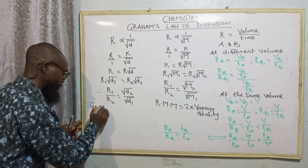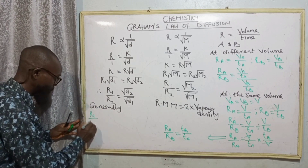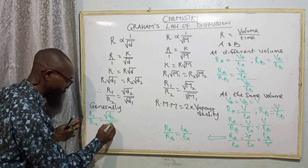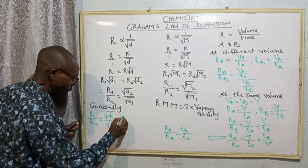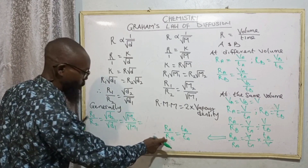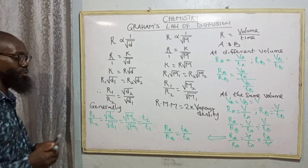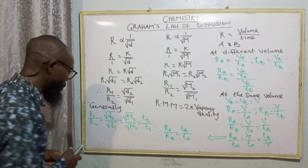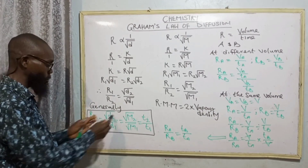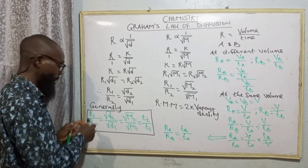Generally, we can conclude that R1 over R2 equals square root of D2 over square root of D1. Also, R1 over R2 equals square root of M2 over square root of M1. Also, R1 over R2 equals T2 over T1. This is the formula for calculating our rate of diffusion. Any two quantities being discussed in the equation, we mix up two of these — either R1 over R2 equals square root of D2 over square root of D1, or R1 over R2 equals square root of M2 over square root of M1, combined with the time formula.